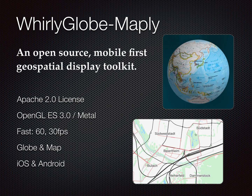Now for a boring slide. WhirlyGlobe-Maply is an open-source, mobile-first geospatial toolkit. What that means is we do it for mobile — iOS and Android. Geospatial: it's all about displaying geodata. It's released under the Apache 2.0 license, which means it's really good for commercial work — you don't have to do anything, you just put your app out there. It uses OpenGL ES and Metal, and it's super, super fast. You can go 60 or 30 frames a second depending on your device. You can do both a globe and a map.